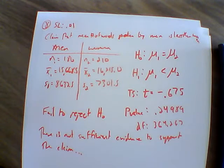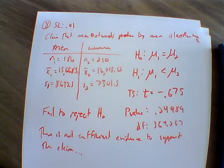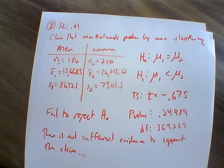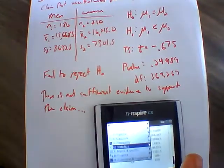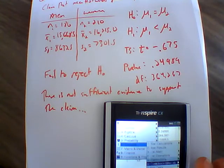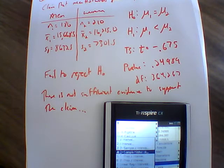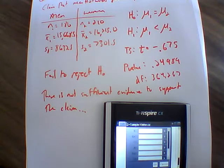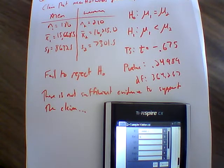Now let's look at a confidence interval — we can always do confidence intervals as well, looking for that equality. If we were to look at this confidence interval, we would go once again to statistics, confidence intervals, and select the two-sample T interval. We'd go with stats since we have our statistics given to us, though we'd have to re-enter everything again, which is one downfall of this approach.